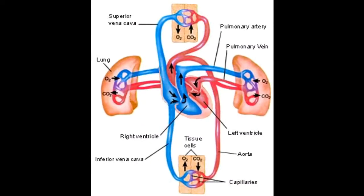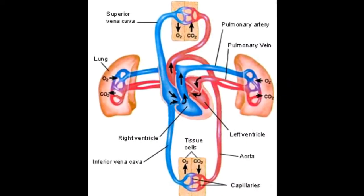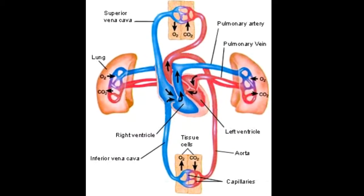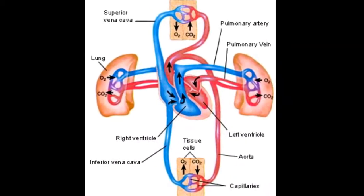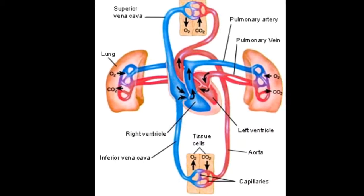Then it flows through a valve that has two different names. It's either called the right AV valve or the tricuspid valve, and from there it goes into the right ventricle. The right ventricle then contracts.